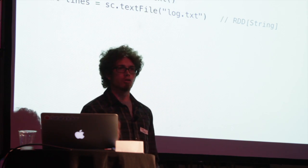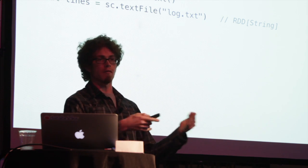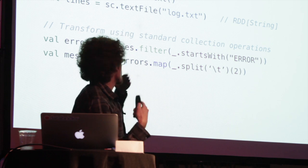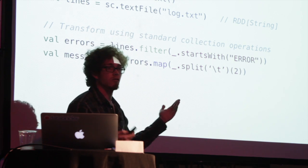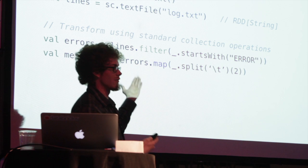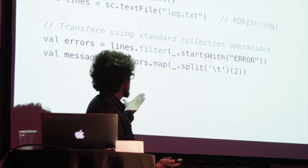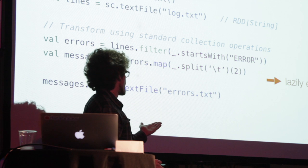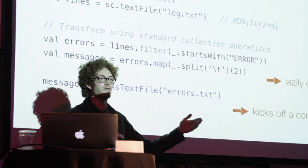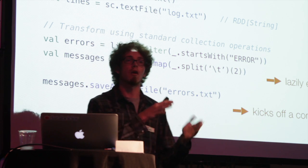The usual workflow for writing a program in Spark is: you load your data to create one of these RDDs, say from a text file. You perform operations and transformations to yield new RDDs — by filtering your original data, by transforming each element, things like that. And then you fire off jobs to kick off computations once you've described these data transformations, and this will be executed in parallel on your cluster.